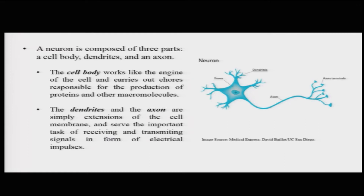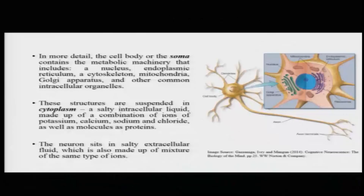The cell body is like the engine of the cell, which carries out chores like the production of different kinds of proteins and other macromolecules responsible for the metabolism carried out in the cells. The dendrites and the axons are just extensions of the cell membrane, but they serve very important functions of receiving and then transmitting electrical signals throughout the body of the neuron to other neurons. The cell body or soma contains the metabolic machinery of the cell.